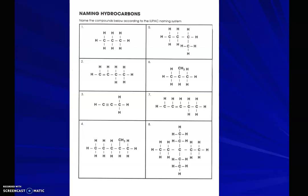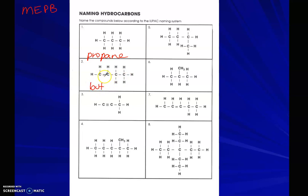Let's take a look at naming some of these hydrocarbons. We have one, two, three carbons — so three carbons would be 'prop-' — and they're all single bonds: propane. This next one has four carbons, so this is 'but-', and then we have a double bond here, so that is '-ene': butene.